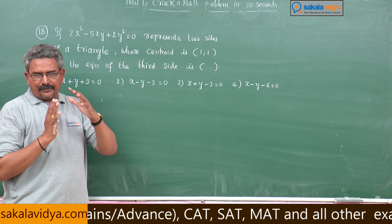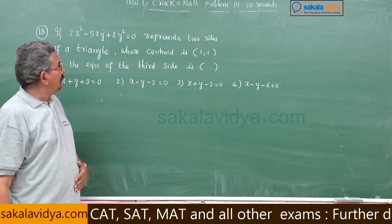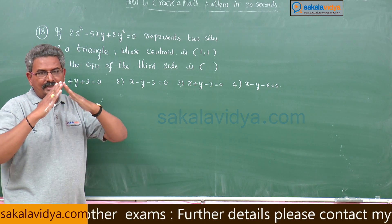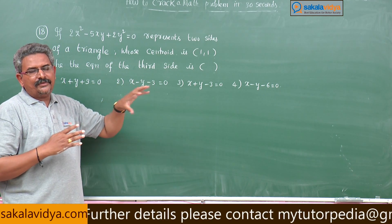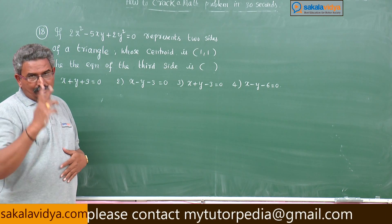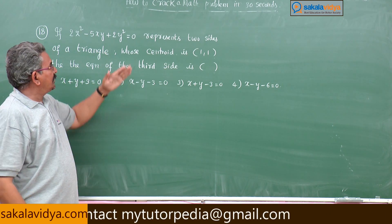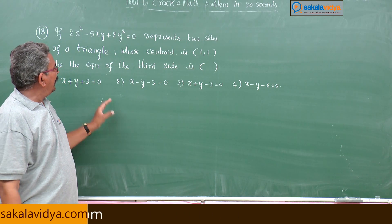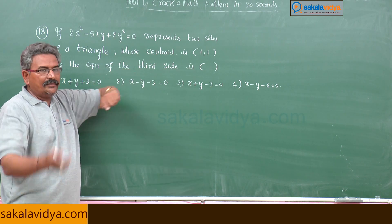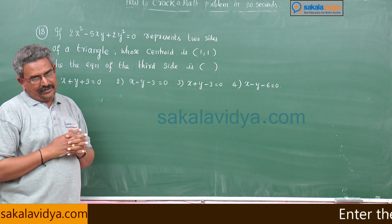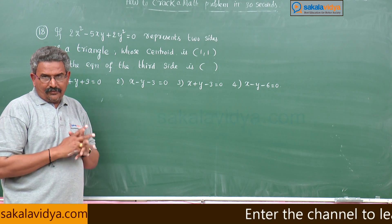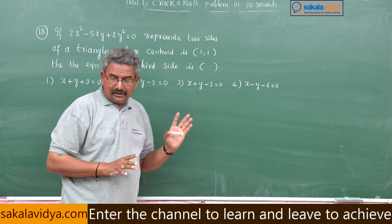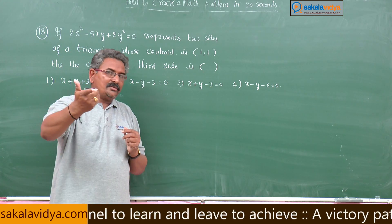Just observing this problem: 2x² - 5xy + 2y² = 0 is a pair of straight lines representing 2 sides of the triangle. If you factorize it, you get 2 linear equations representing those 2 sides. The centroid of the triangle formed by the 3 sides is given, and we need to find the third side. There is a very simple shortcut for this.